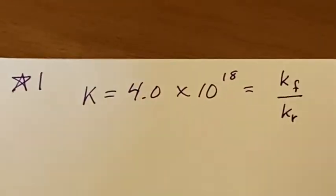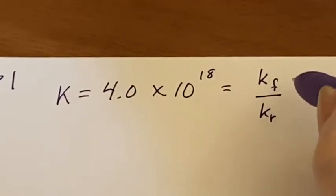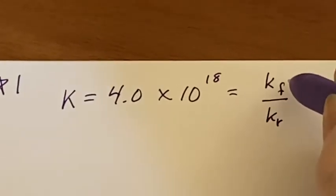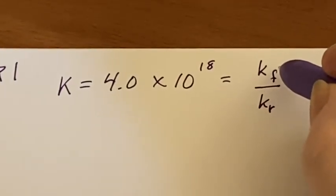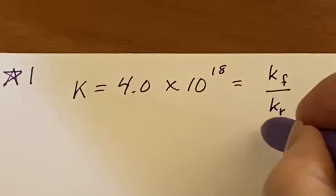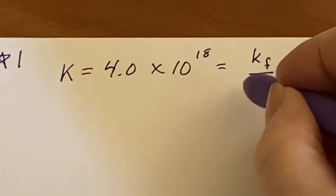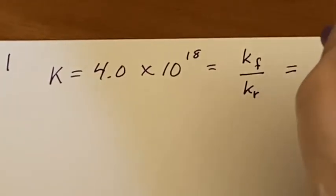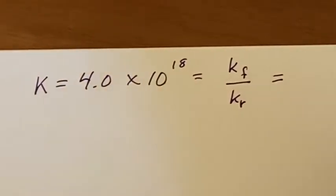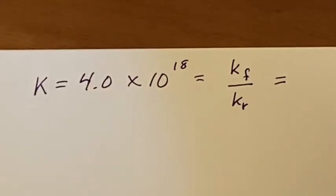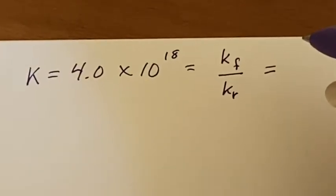So that means that the forward direction must happen much more quickly. That rate is much higher than the reverse direction. So I can look at that and say, if the forward rate is really huge, then it means I'm going to end up with lots of product compared to my reactants.